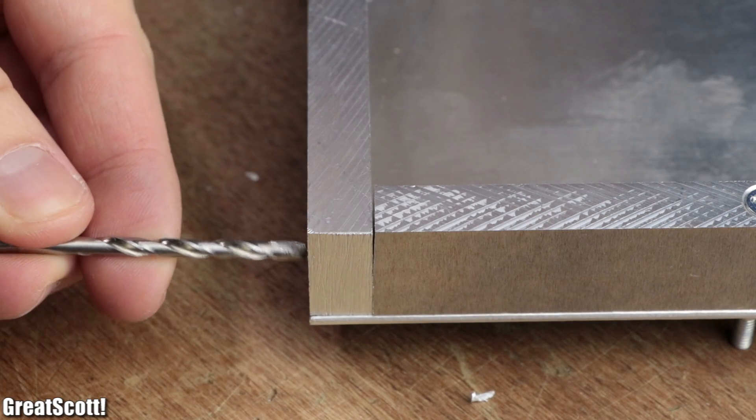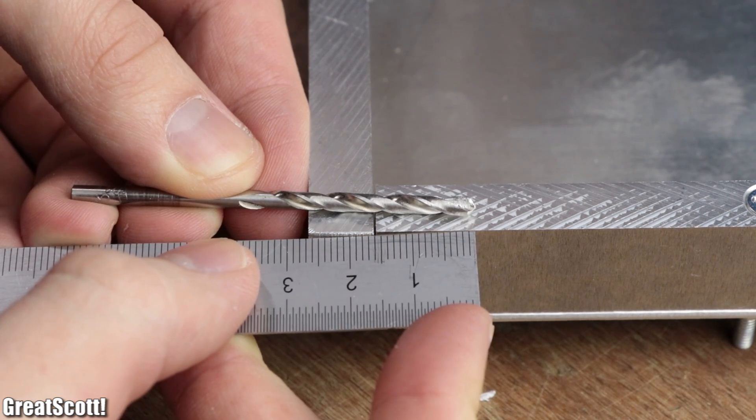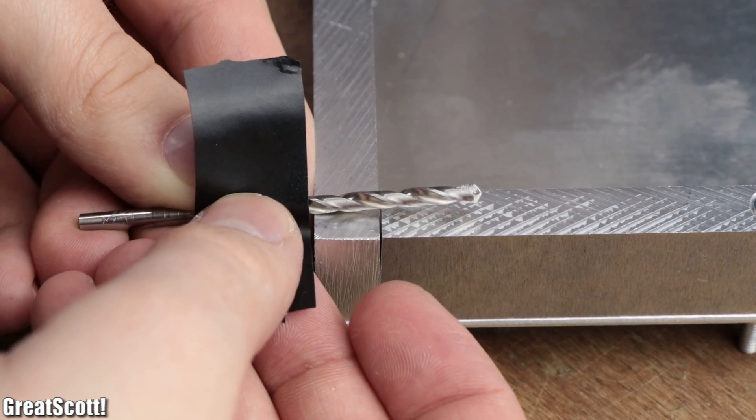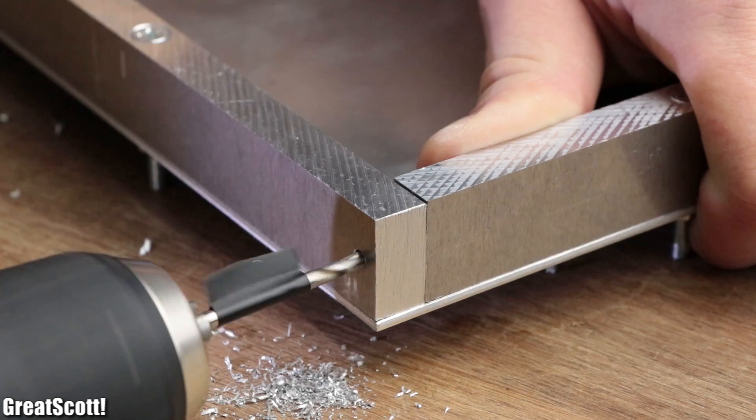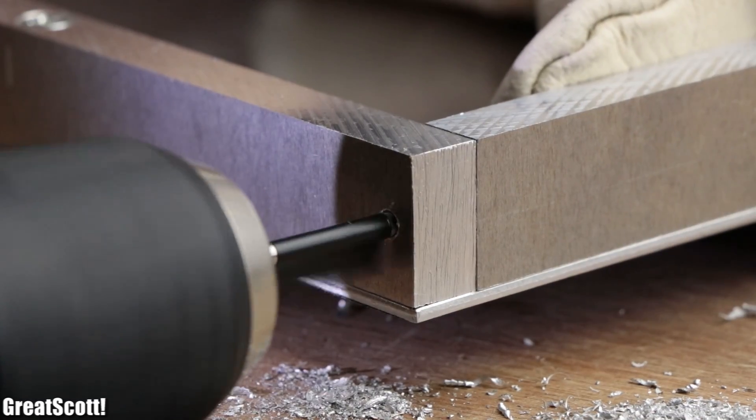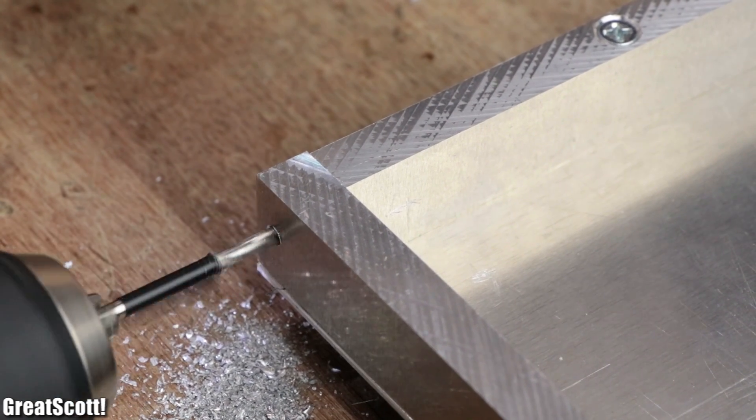This way I now have guiding holes for the 3.2 mm drill bit that needs to enter the following material for 1.5 cm. By using an electric drill, a steady hand, and a bit of brute force, I created the four holes in the longer square pieces.